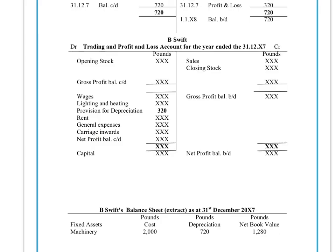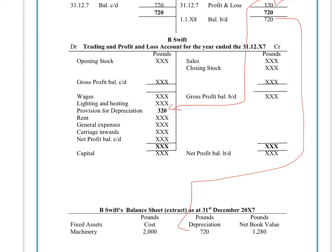That annual depreciation of £320 would feed into the debit side of your profit and loss account and would be taken away from your gross profit to reduce your net profit. The total depreciation of £720 goes into your balance sheet, so you can work out the net book value of the machine at the end of 2007. We paid £2,000 for it, it's now lost £720, so its net book value is £1,280.